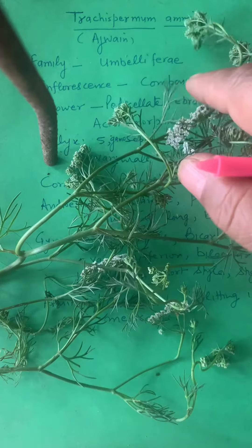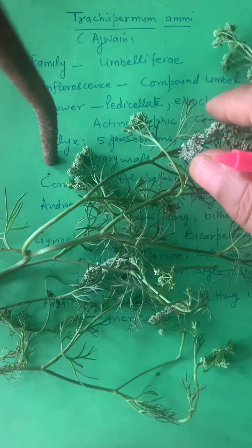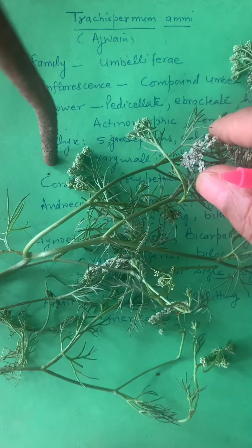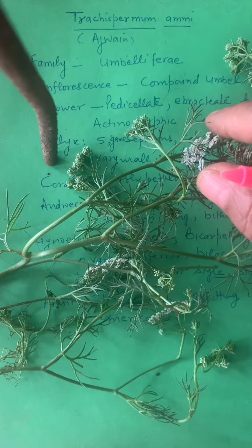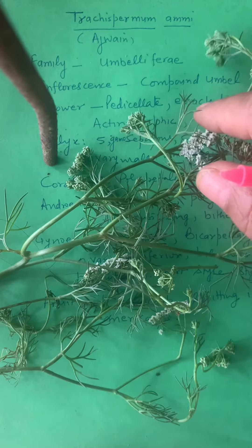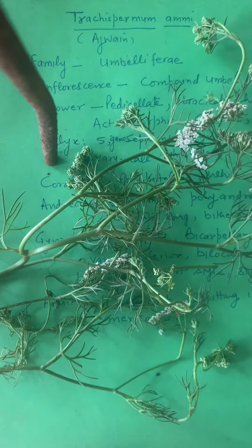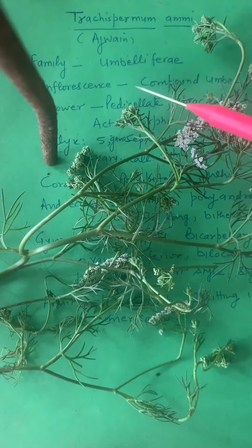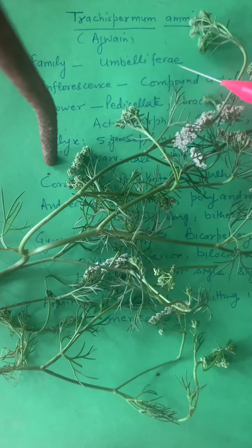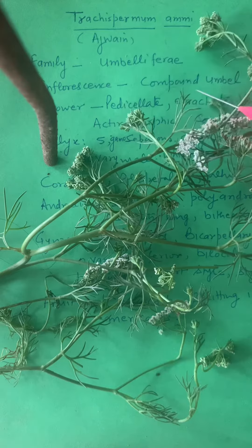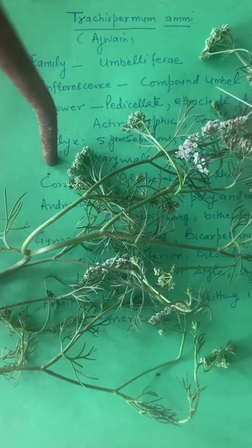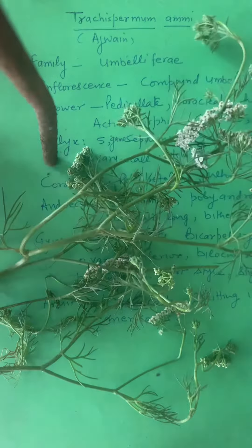Flower of Ajwain. Its botanical name is Trachyspermum ammi and this belongs to family Umbelliferae. Its inflorescence is a compound umbel.